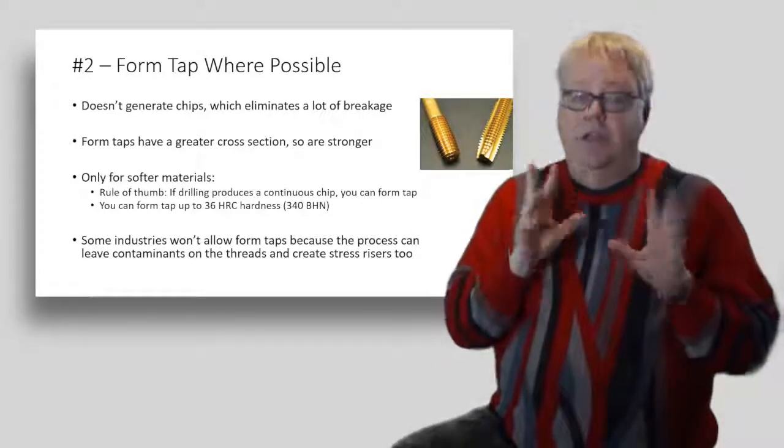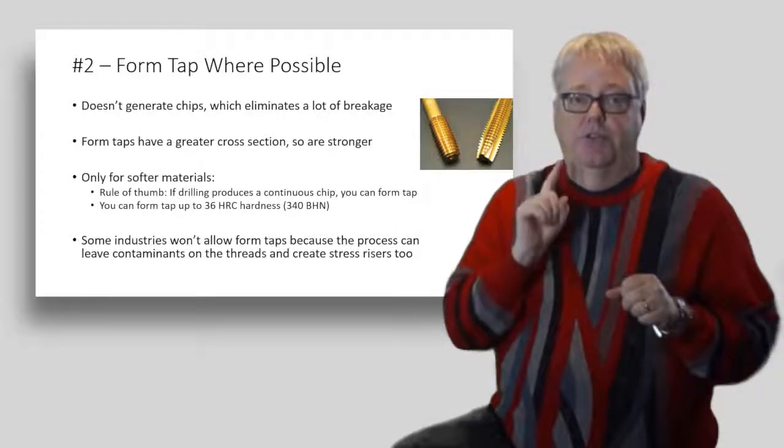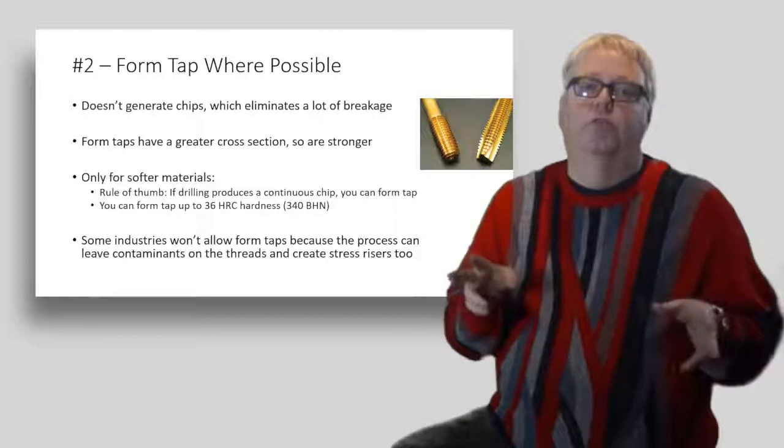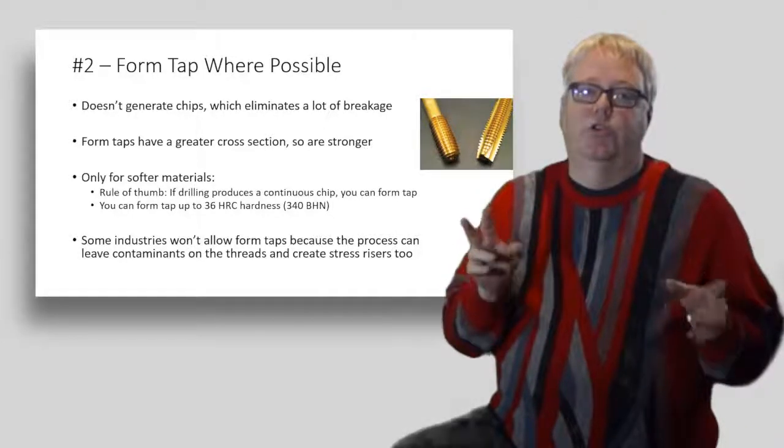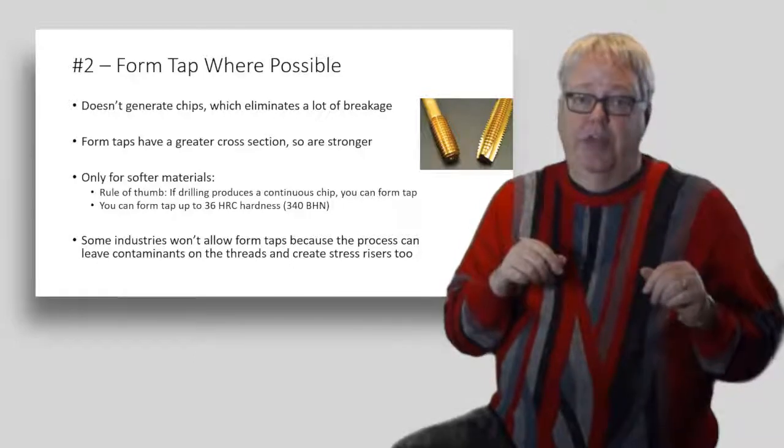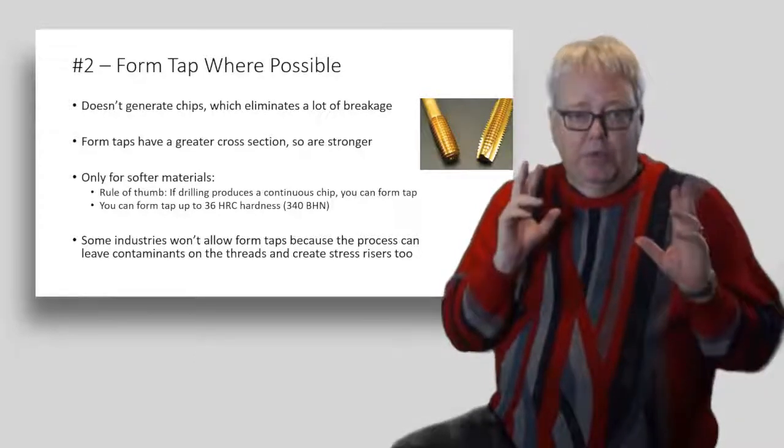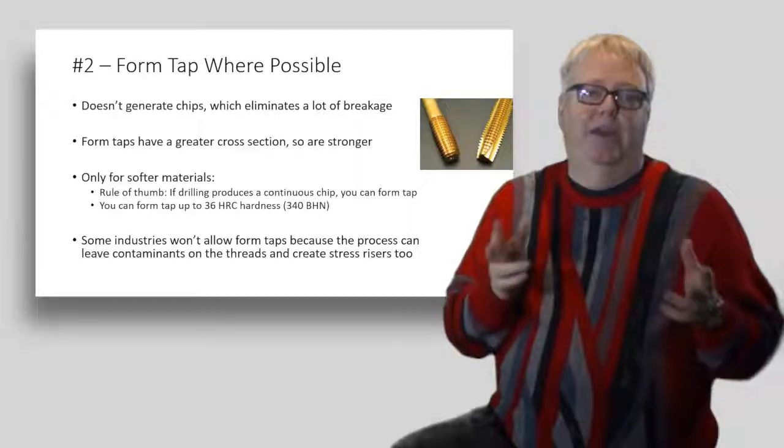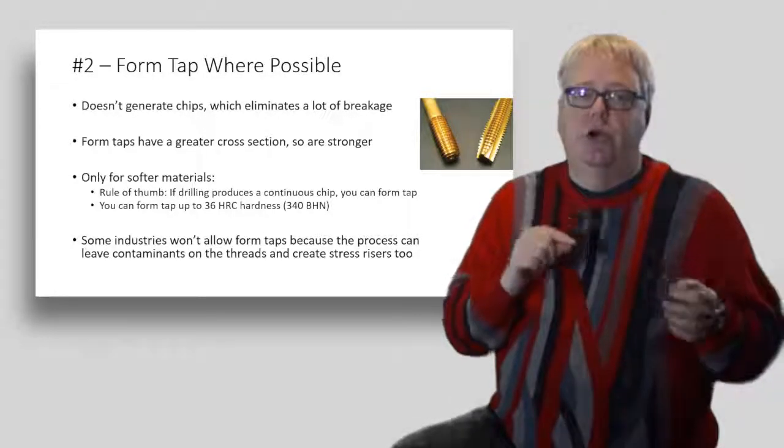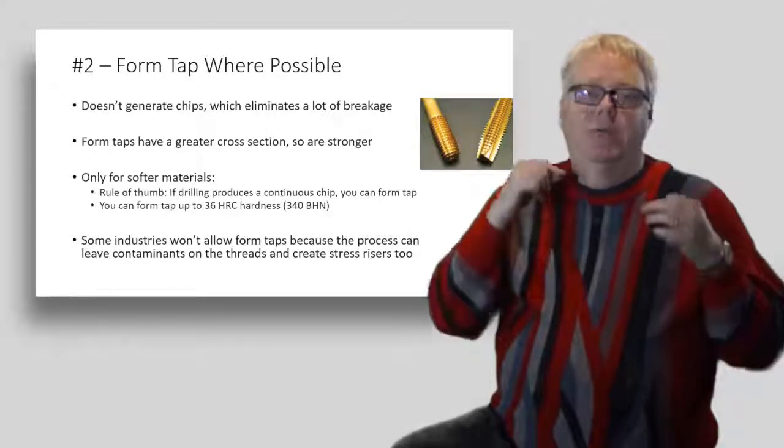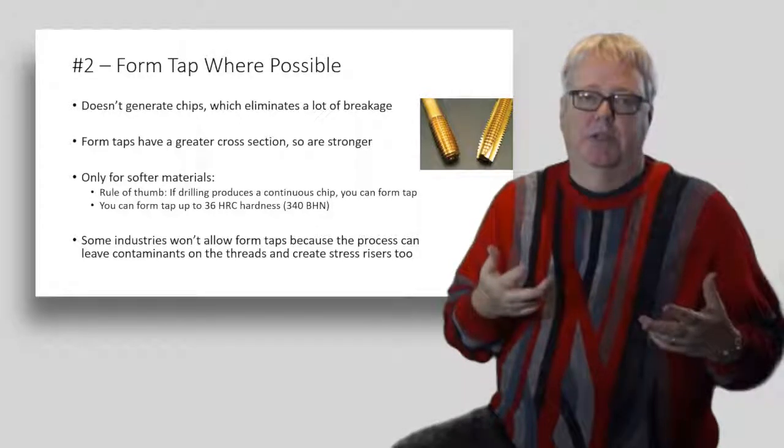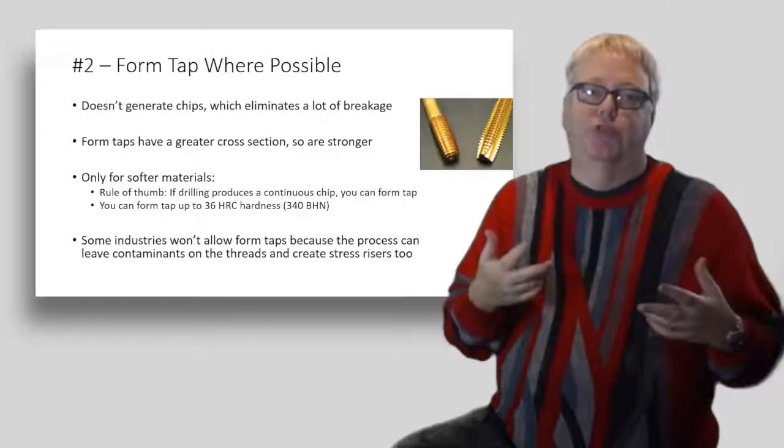Now they do have two disadvantages. First, form taps cannot be used with hard materials. You can only form tap up to 36 HRC hardness. There's a lot more materials than you'd think that are softer than that, but there will definitely be materials you encounter that can't be form tapped. Second, some industries don't allow form taps because the process can create voids in the threads that trap contaminants. It also creates stress risers on the threads, so be sure to be aware of that for your customers.